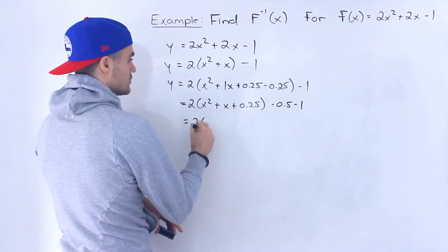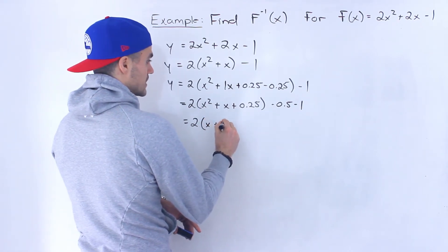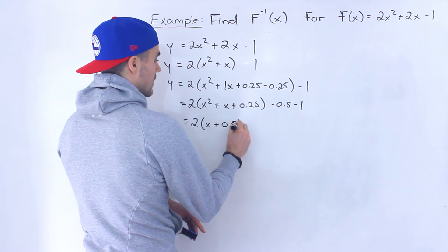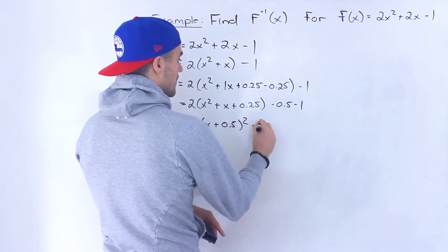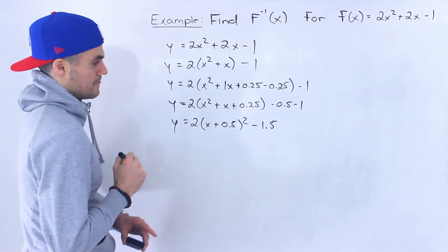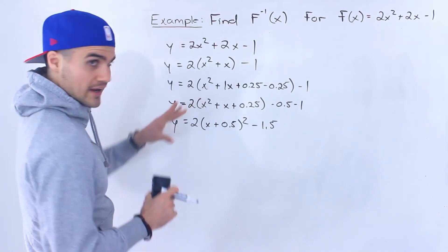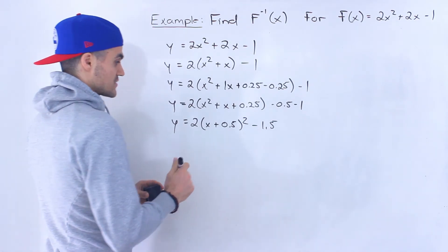So then we'd have 2. Then over here, this is a perfect square trinomial. It would be x plus 0.5 to the power of 2. Then this would be minus 1.5, like that. All right, so we took this, converted it to vertex form.